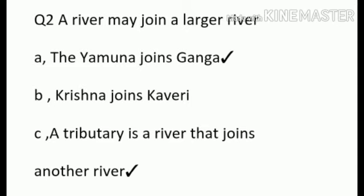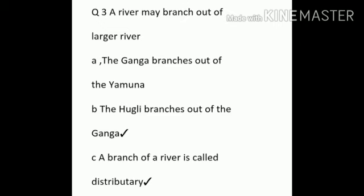Third question: a river may branch out of a larger river. Here you can see two answers. The Hooghly branches out of the Ganga, and a branch of a river is called a distributary. What is the branch of a river? Distributary. Answers are B and C.